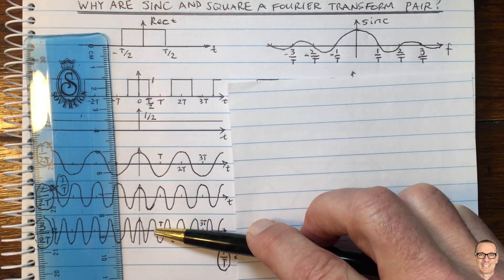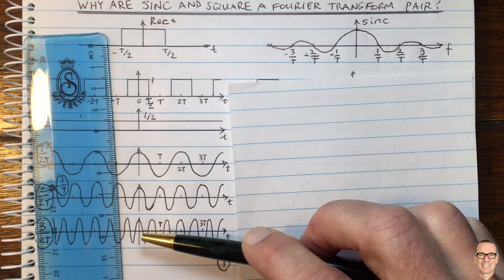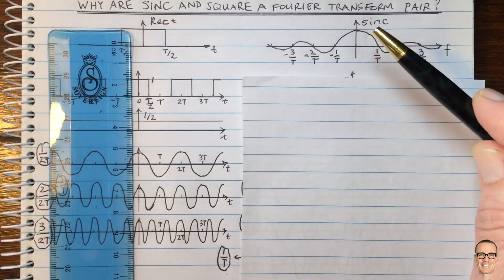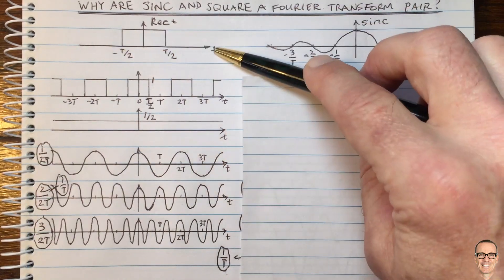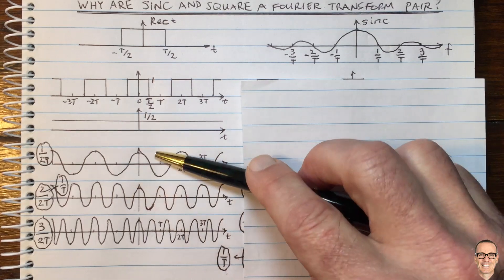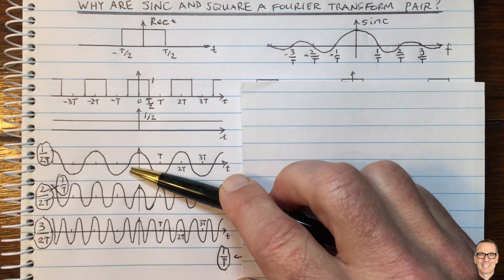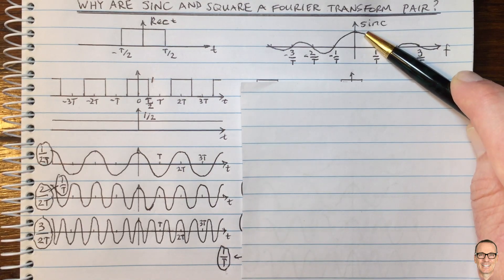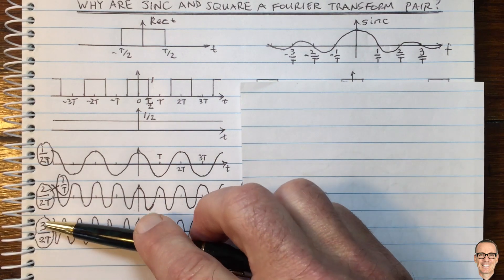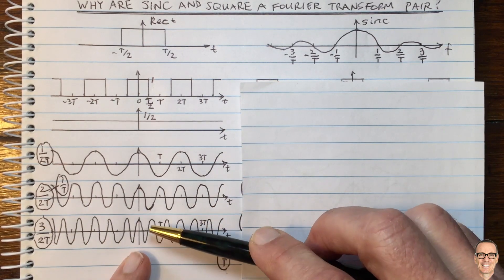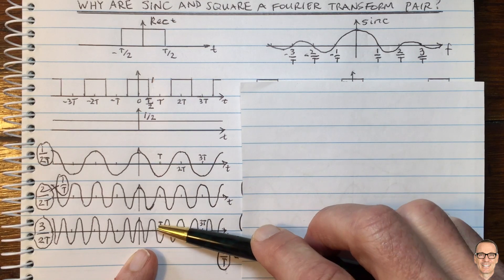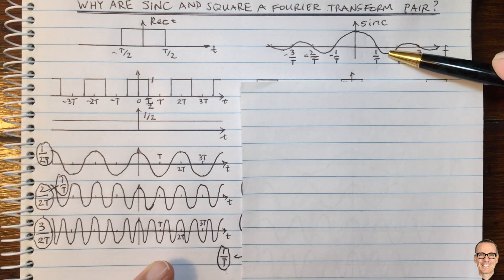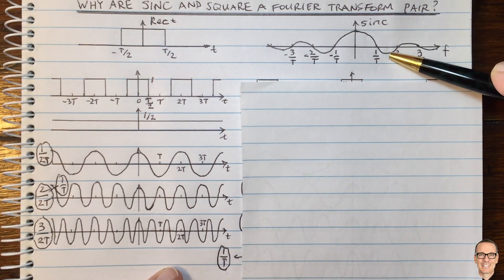We'll need to add a negative of this frequency component. Now let's link back to the sinc. The 1/(2T) component needed a positive amount — and in the sinc at 1/(2T), there's a positive value. The 3/(2T) component needed a negative amount — and sure enough, when we look at the sinc at 3/(2T), it gives a negative value. So we're starting to get intuition about the sinc function by examining the waveforms needed to construct the square.